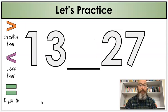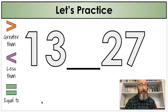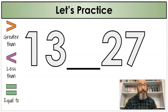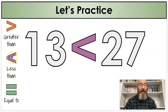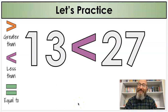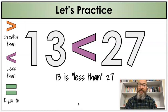I have two more numbers: thirteen and twenty-seven. The numbers are getting bigger, but we can still compare them. Is thirteen greater than twenty-seven, less than twenty-seven, or equal to twenty-seven? It is less than — the alligator is eating the twenty-seven. My sentence: thirteen is less than twenty-seven. That is correct.